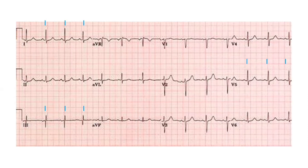If the R waves were not aligning with the three marked lines on the paper, that would indicate an abnormal rhythm — arrhythmia. The blue line should coincide with the other R waves. If there was a problem, the R-to-R interval would be different from the marked lines.